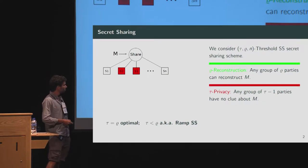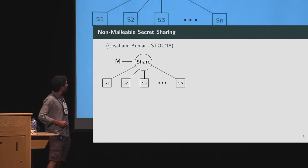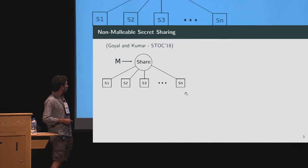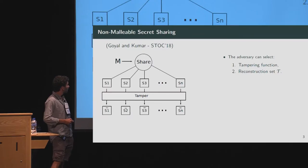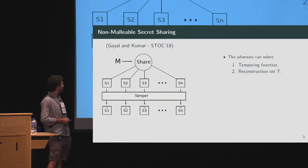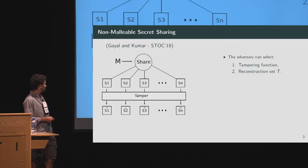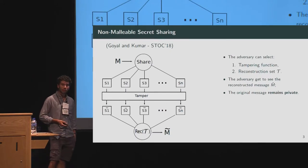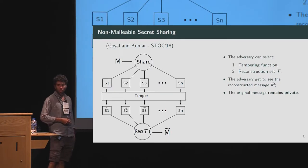Beyond these two properties, we can think about a new property. There is a very nice work by Goyal and Kumar from last year at STOC, which introduced the notion of non-malleability. In this attack scenario, we share our secret message and get shares. An adversary decides a tampering function and a reconstruction set T, applies the tampering function to the shares, and gets to see the reconstruction of the tampered shares. The non-malleability property says that the privacy of the original message is maintained even if the adversary sees this tampered message.